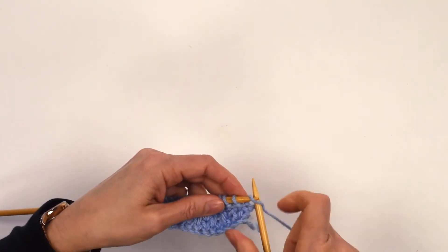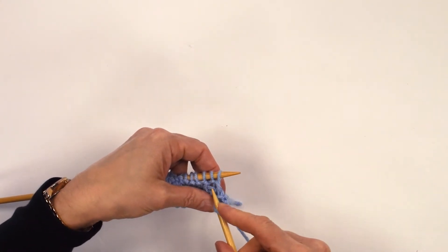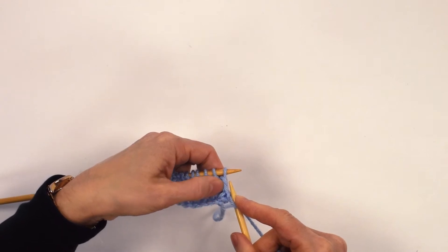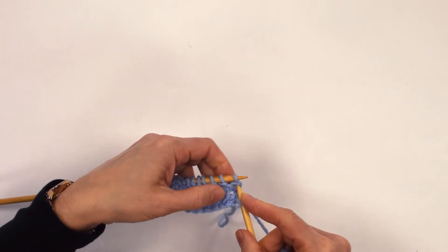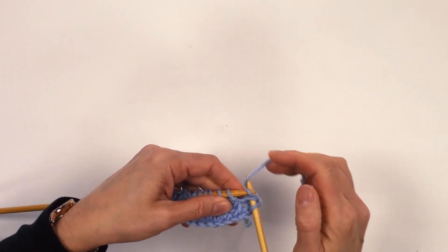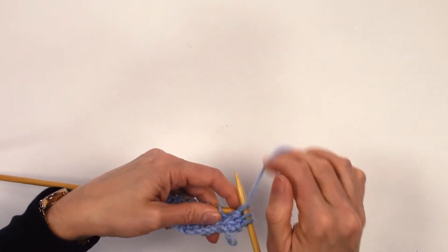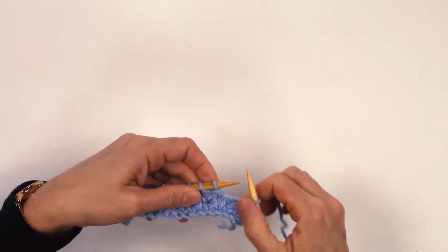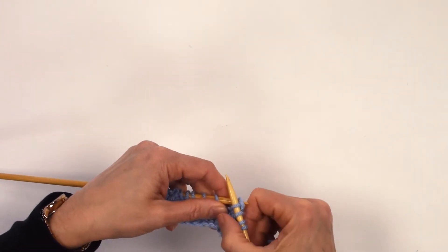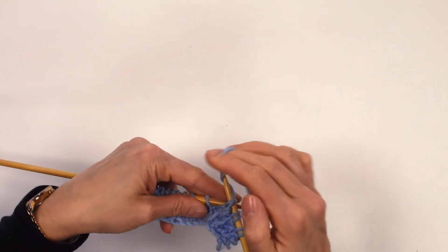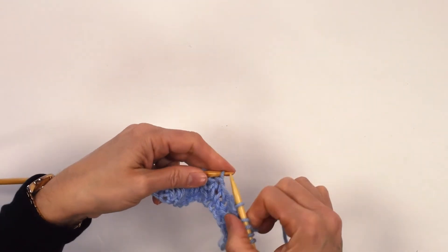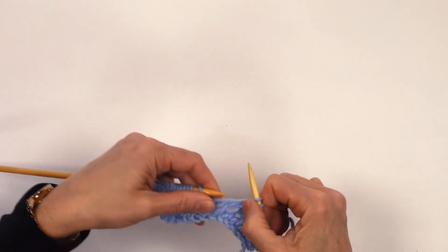So you slip your first stitch. Then here you can see how they're now starting to look like knit stitches further down. So you do your K1B. Purl one, another K1B. Purl one, another K1B.